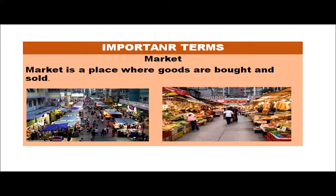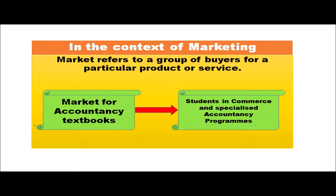Now let us see the important terms of marketing. The first term is market. In commerce, a market is a place where goods and services are bought and sold. But in the context of marketing, the word market refers to a group of buyers for a particular product or service.